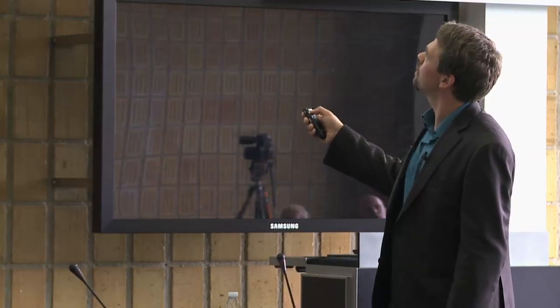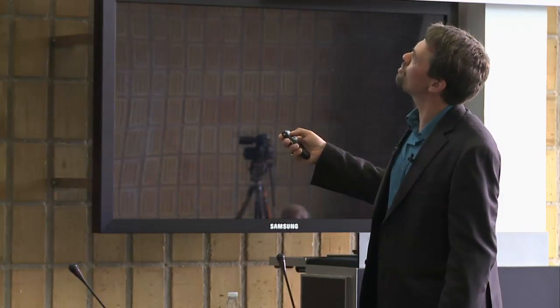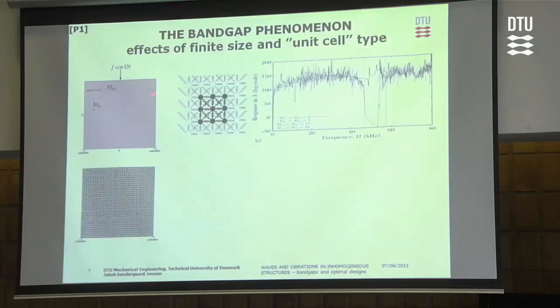We showed the importance of the number of unit cells placed in the structure. The vertical lines represent the predicted band gap for the infinite material. We can see clearly a footprint of the band gap within this frequency range — a significantly reduced vibration level. However, for only 3×3 unit cells, there are too few to see the band gap effect in the finite structure.